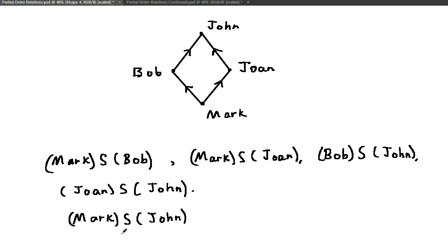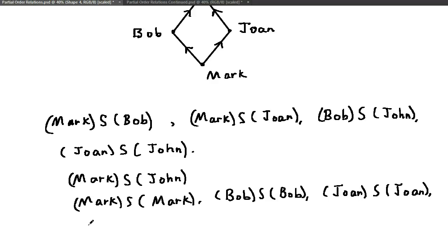Since each person in A is identical to his or herself, we have Mark S Mark, and Bob S Bob, Joanne S Joanne, and John S John. That is, S is reflexive.